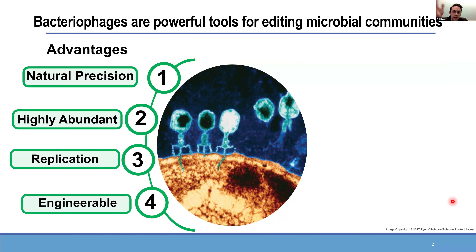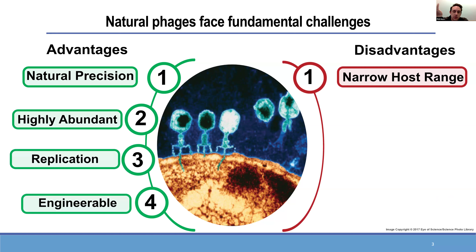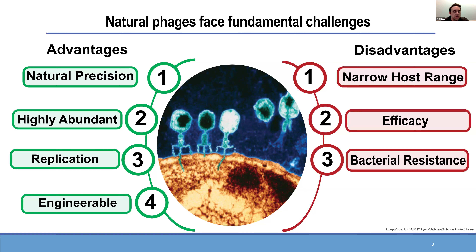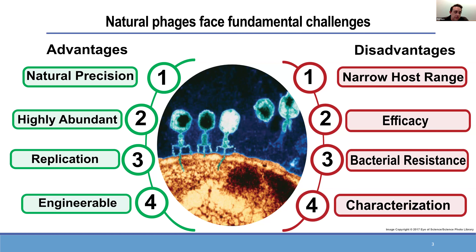But there are reasons why you don't see phages used for many specific applications. You can't go to Walgreens and get a phage cocktail to treat something. That's because natural phages face some fundamental limitations. The flip side of natural precision is a narrow host range, which makes finding the right combination of phages to target all strain variants very challenging. They also typically don't have amazing efficacy — they exist in a kind of equilibrium with their host. Resistance occurs, just like antibiotic resistance. And they're frequently poorly characterized, so we have little understanding of whether we have the best phage for the job.